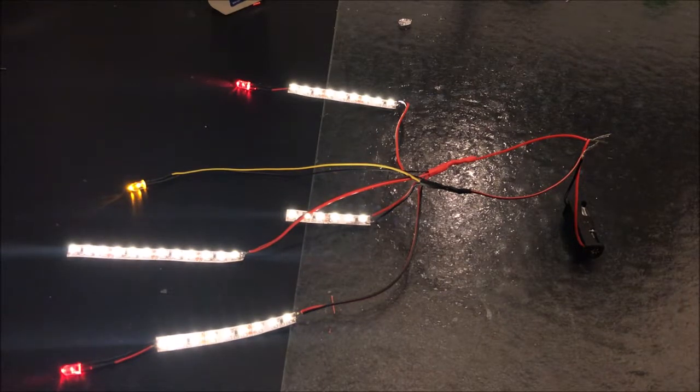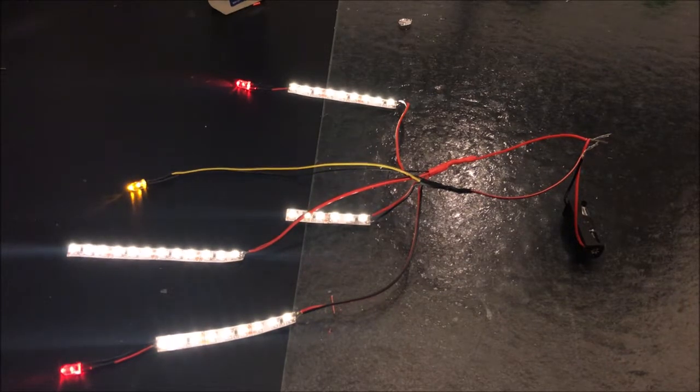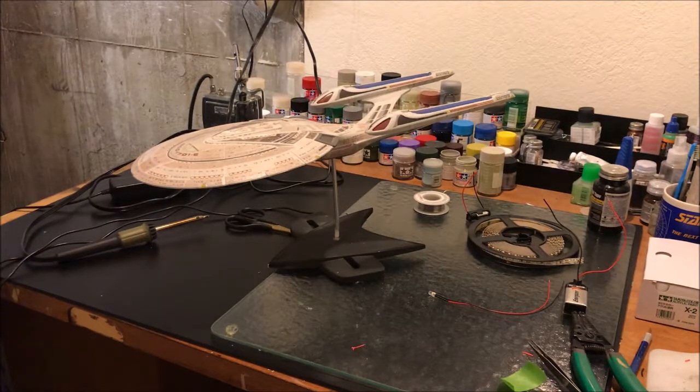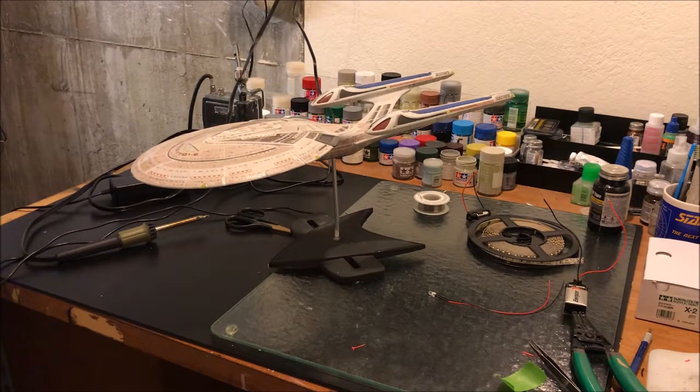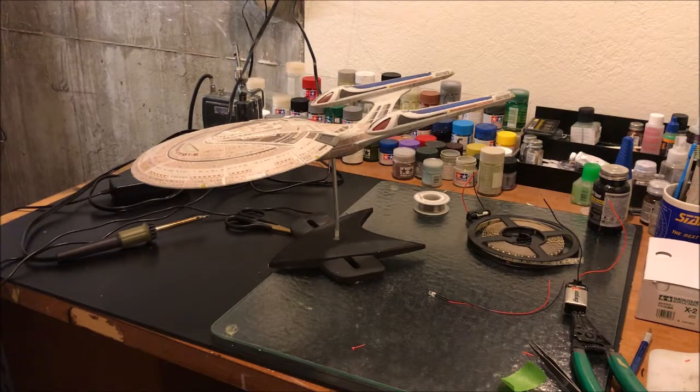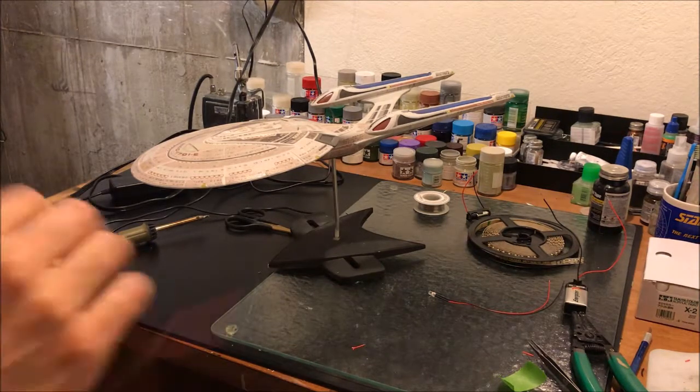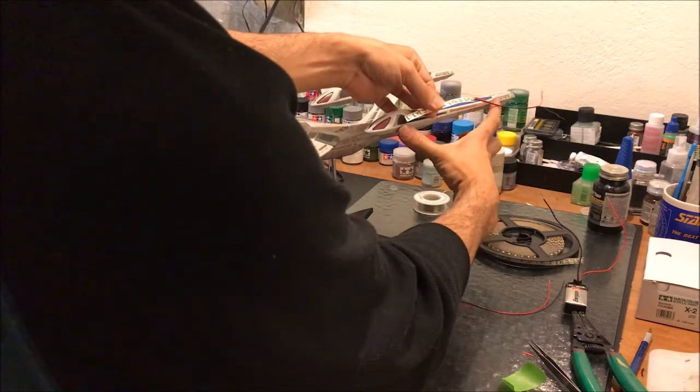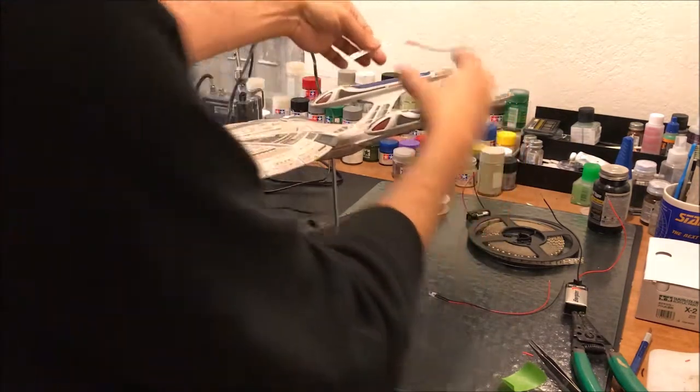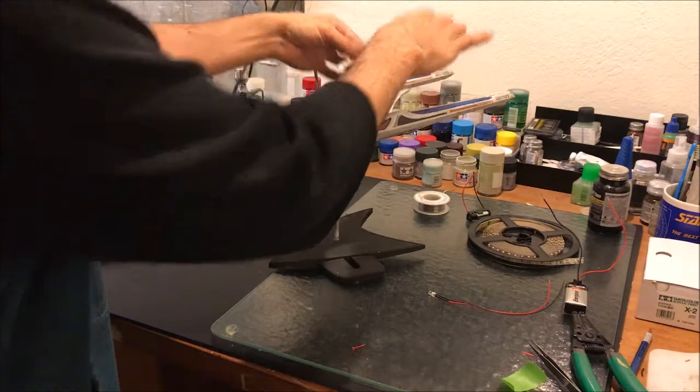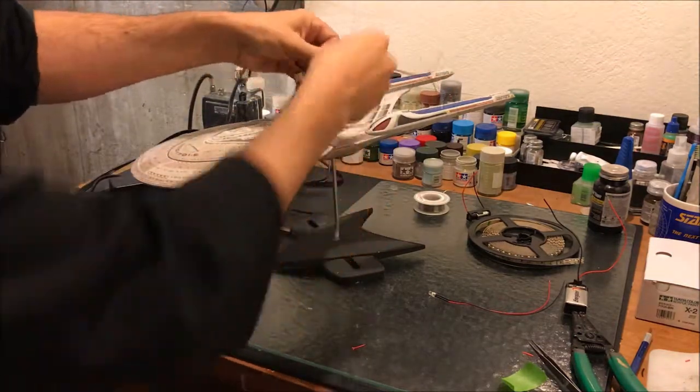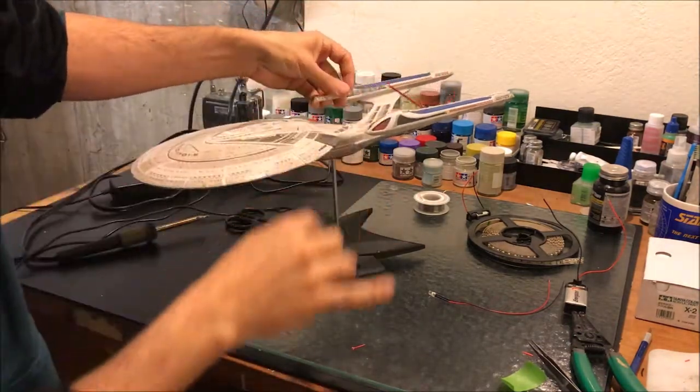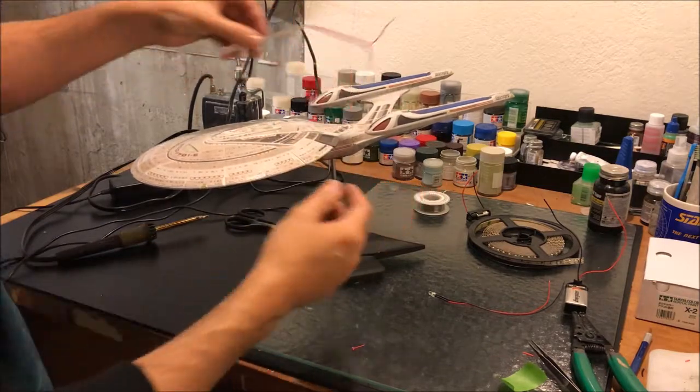Now going back to the 1701E, this model was lit with nothing but LED strips. There's an LED strip right inside this nacelle, another LED strip in this nacelle. In this main hull, I taped the LED strip down forward-facing to light up this entire section.